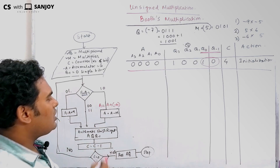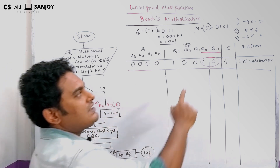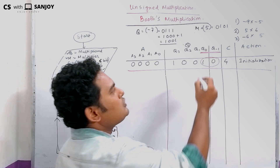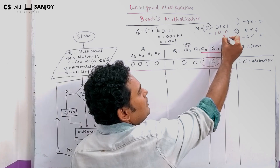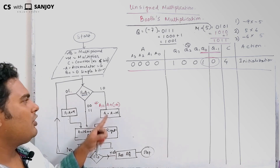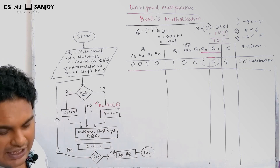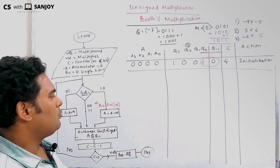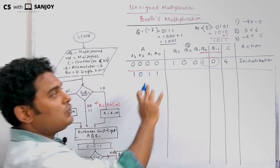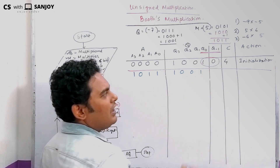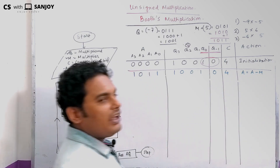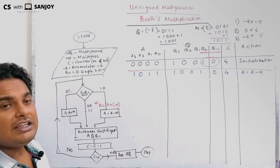Accumulator is 0000, and we add 1011. So A equals A plus (-M). The accumulator becomes 1011, Q remains 1001, and Q minus 1 remains 0. Now we perform arithmetic shift right on A and Q together. Most significant bit is retained: the sign bit 1 is kept, and bits shift right. After arithmetic shift right: A becomes 1101, Q becomes 1001 with the last bit of A shifted into Q, and Q minus 1 becomes 1. Counter decrements: C equals C minus 1, so C becomes 3.